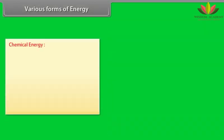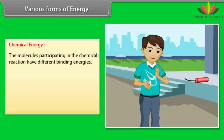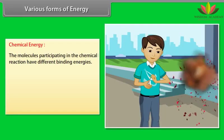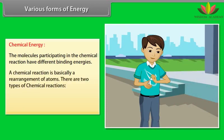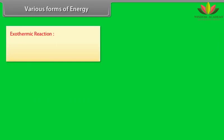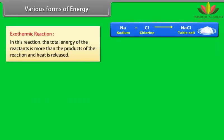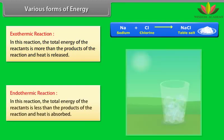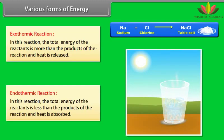Chemical energy. It arises from the fact that the molecules participating in the chemical reaction have different binding energies. A chemical reaction is basically a rearrangement of atoms. There are two types of chemical reactions: number 1, exothermic reaction, and number 2, endothermic reaction. Exothermic reaction: in this reaction, the total energy of the reactants is more than the product of the reaction and heat is released. Endothermic reaction: in this reaction, the total energy of the reactants is less than the product of the reaction and heat is absorbed.